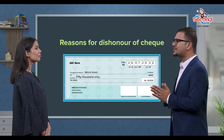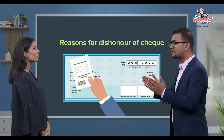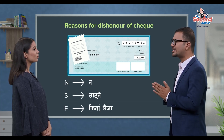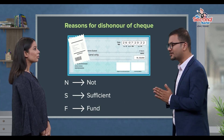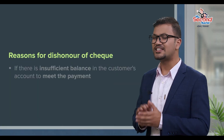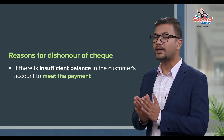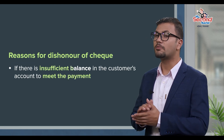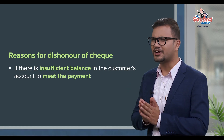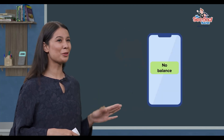One reason the check is rejected is NSF — that means Non-Sufficient Fund. NSF means there is not sufficient fund available. The amount of the check cannot be paid because of non-sufficient funds. You can also call it a bank account that does not have enough balance.